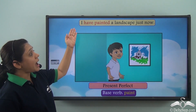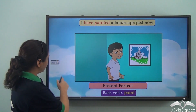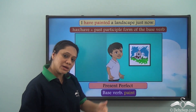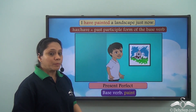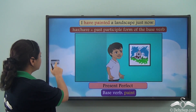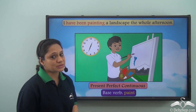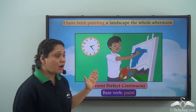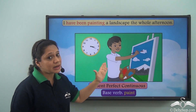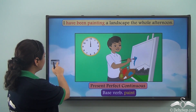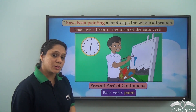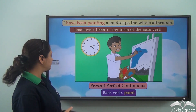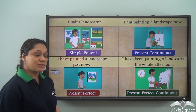In the present perfect tense, we would say "I have painted a landscape just now," and the verb is formed using has or have with the past participle form of the base verb. In this case, the base verb is "paint" and the past participle form is "painted." In the present perfect continuous tense, we would say "I have been painting a landscape the whole afternoon." The verb form in the present perfect continuous is has or have with been and then the -ing form of the base verb.